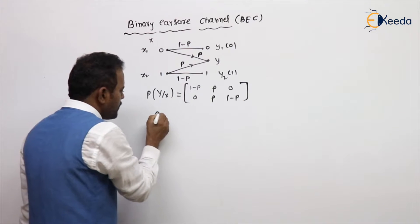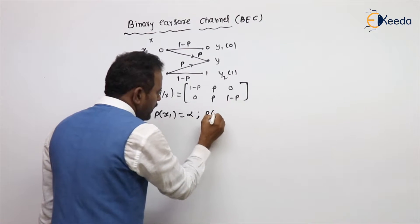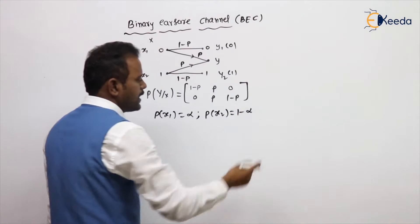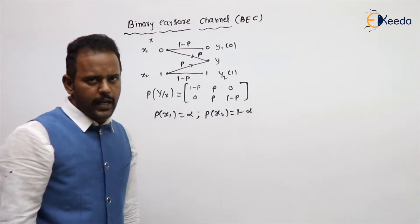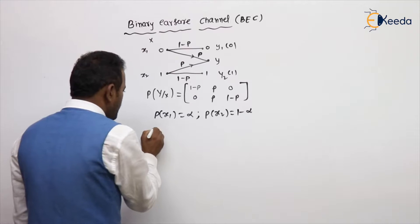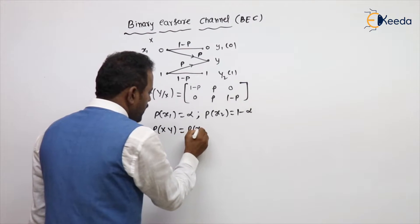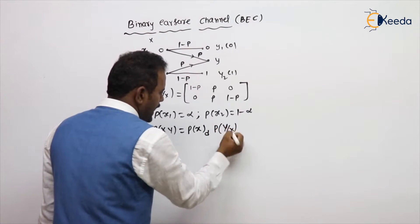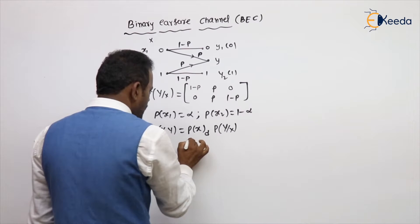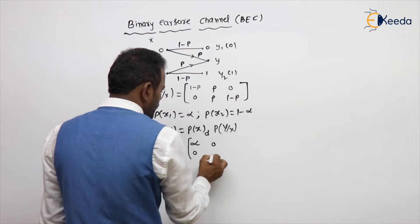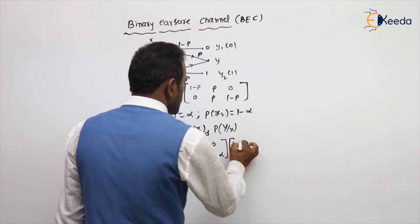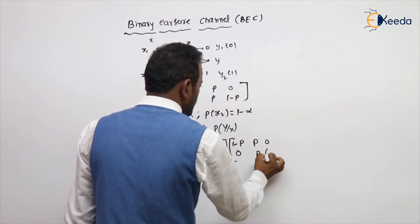Let the probability of x1 be alpha, and x2 be 1 minus alpha. To calculate the entropy of the channel, we need the joint probability matrix. The joint probability matrix P(x,y) equals P(x) diagonal multiplied by P(y|x). P(x) diagonal is the input probabilities in diagonal form: alpha, 0; 0, 1 minus alpha. P(y|x) is: 1−p, p, 0; 0, p, 1−p.